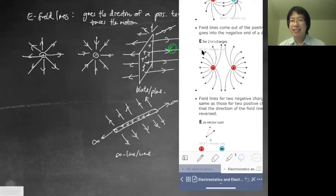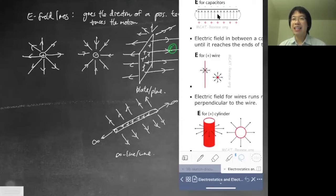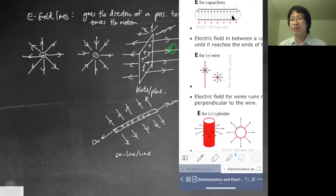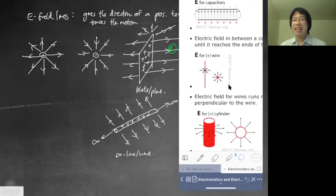You can see edge effects on the capacitor, but if the plate is infinite, we have the ideal situation where we just care about the uniform part. The electric field at the edge is more complicated because it's changing, but in the middle it's constant and uniform. For a wire, if it's negatively charged, just reverse the direction of the arrows so they point inward. You can also have a cylinder shape with many examples.